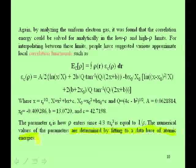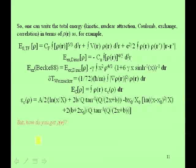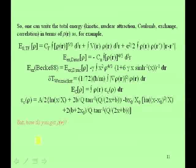Given a density, people can now calculate: kinetic energy (with Weizsäcker gradient corrections), electron-nuclear attraction, Coulomb energies, Dirac exchange with Becke gradient corrections, and the correlation energy using the correlation functional. All that can be done given a density. But then how do you get the density?